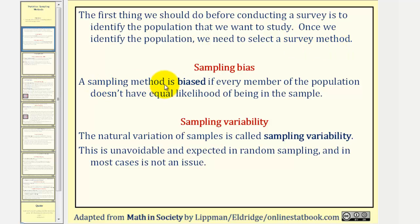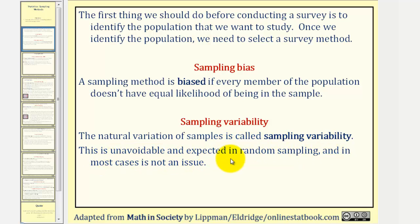A sampling method is biased if every member of the population doesn't have equal likelihood of being in the sample. The natural variation of samples is called sampling variability. This is unavoidable and expected in random sampling, and in most cases is not an issue. So we can't avoid sampling variability, but we should try to avoid sampling bias.